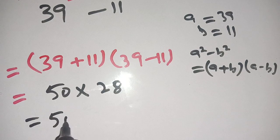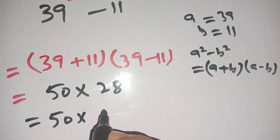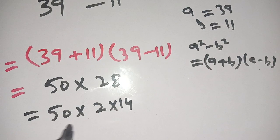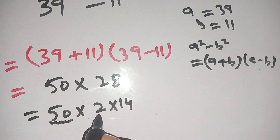Now on the next step we can write this as 50 times 28 can be broken down as 2 times 14. Now we multiply 50 by 2, it becomes 100 times 14.